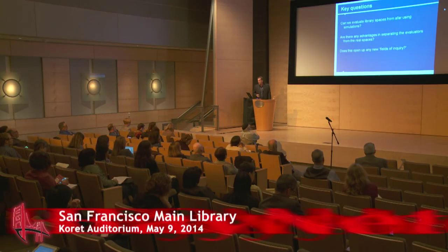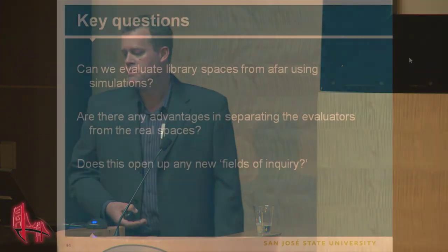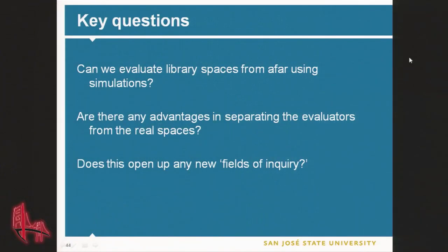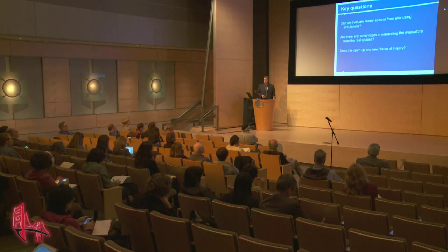So the key question: can we evaluate library spaces from afar? Yes, darn right — and we can even do it with photos. But it's more interesting and more hands-on if you can get in there and walk around with an avatar. Is there any advantage for separating the evaluators from the real spaces? There is — because you can see bias. You're able to change that space in very subtle ways and see the bias of the evaluator. And does this open up any new fields of inquiry? I think it does. We have to continue throwing different populations into those virtual environments and getting feedback on what they think a good library space looks like.